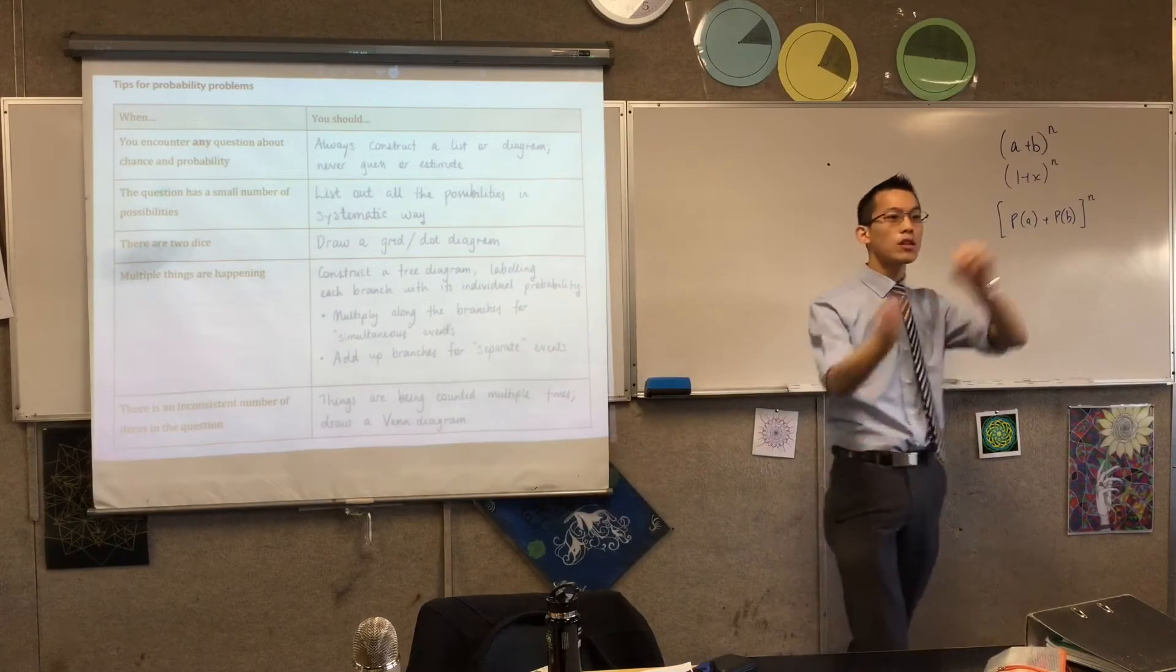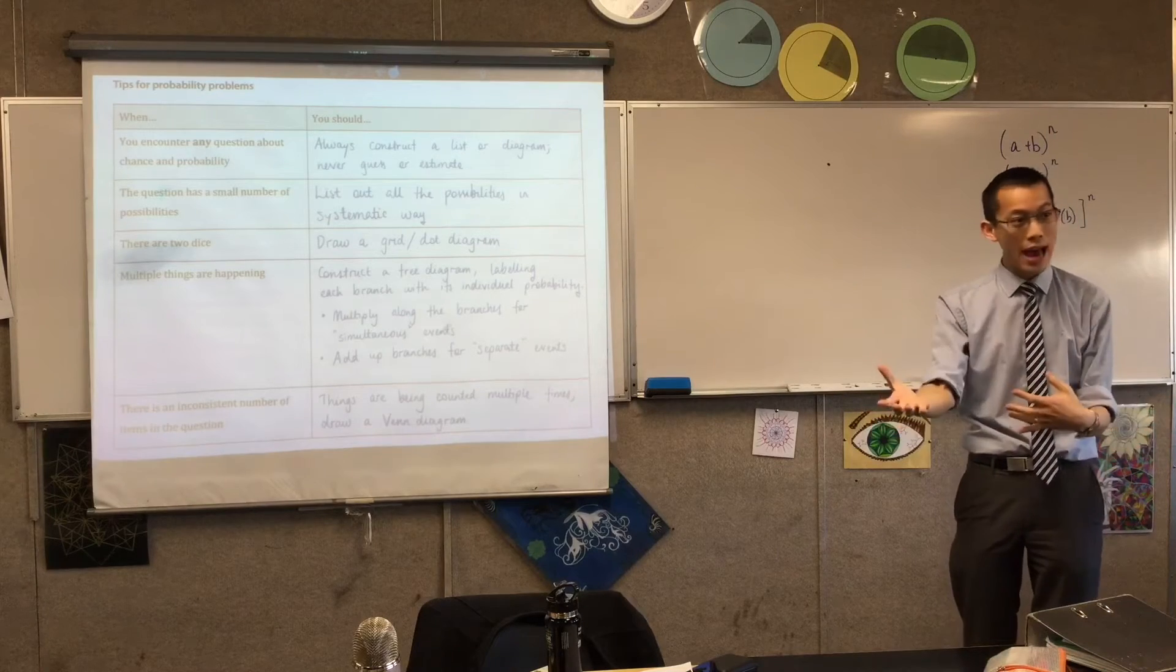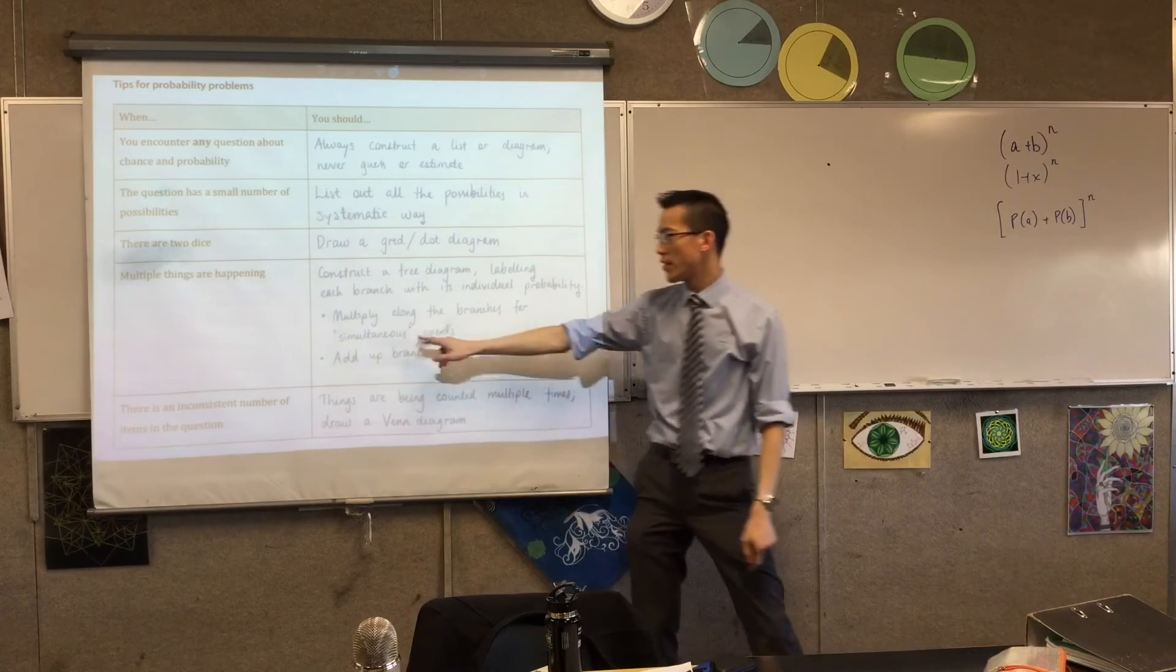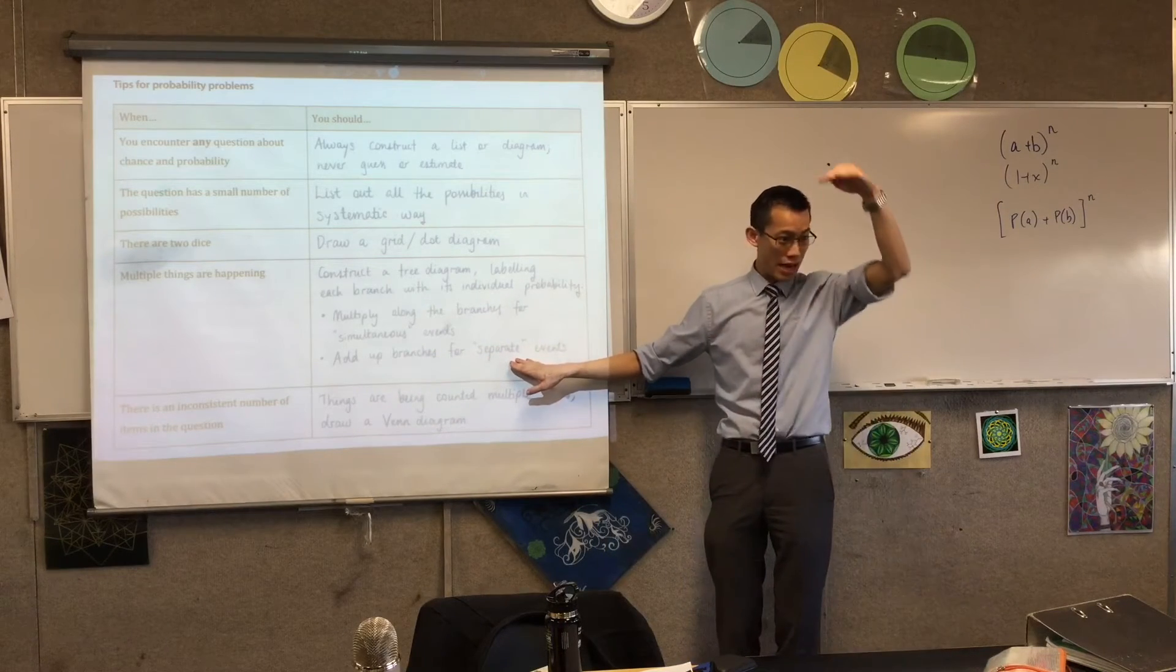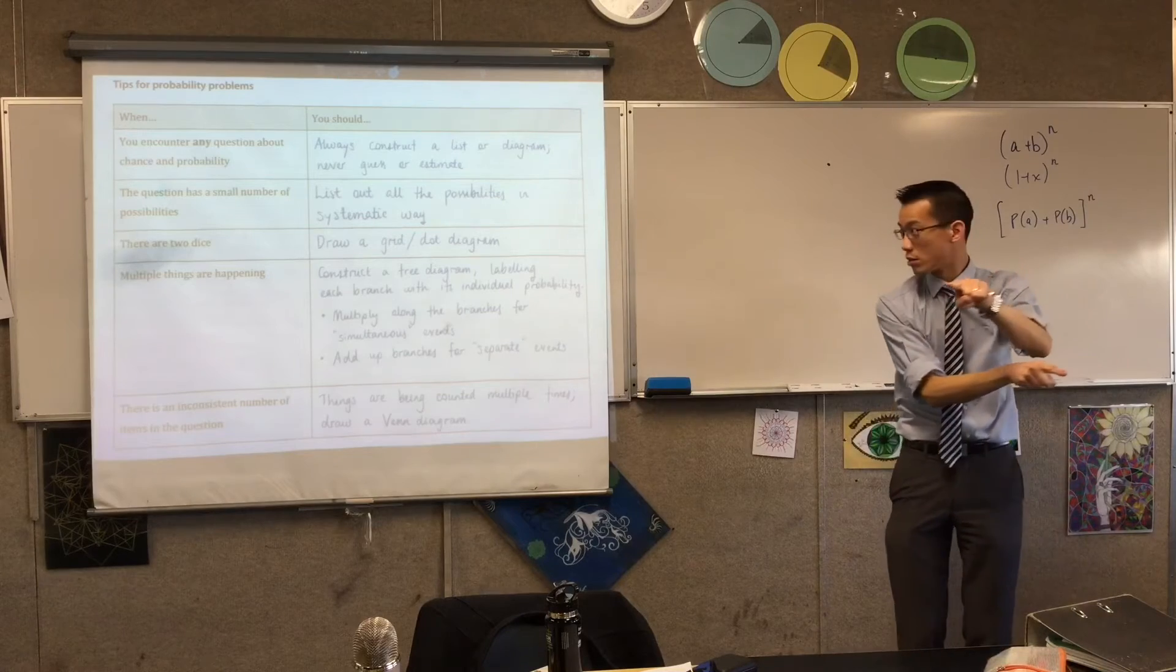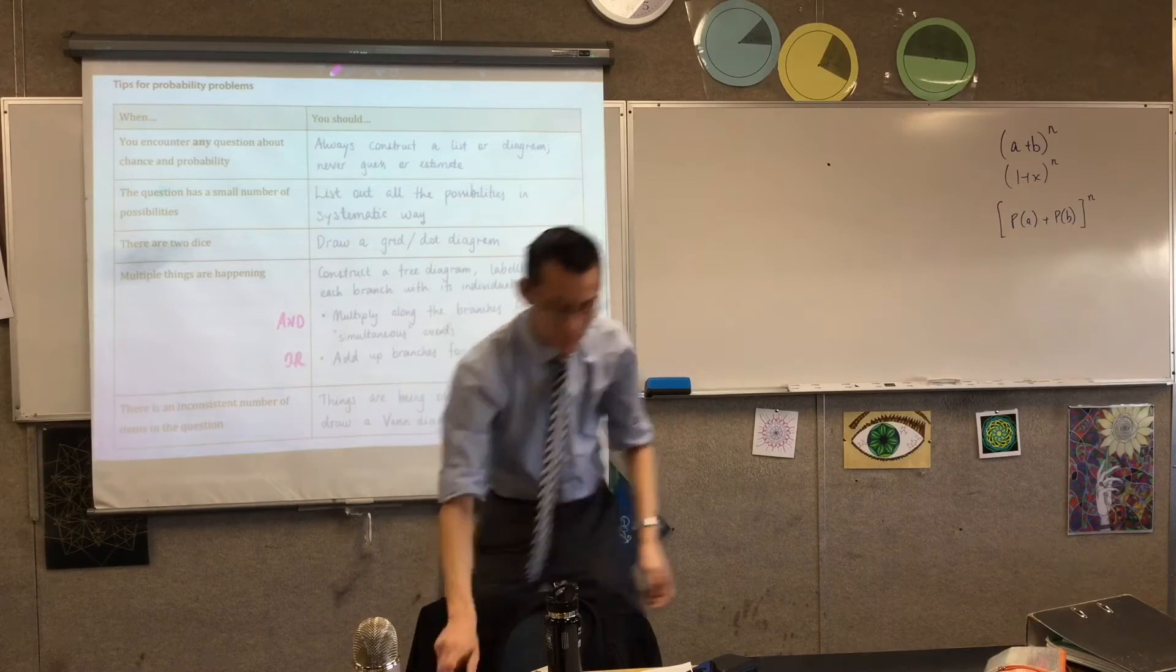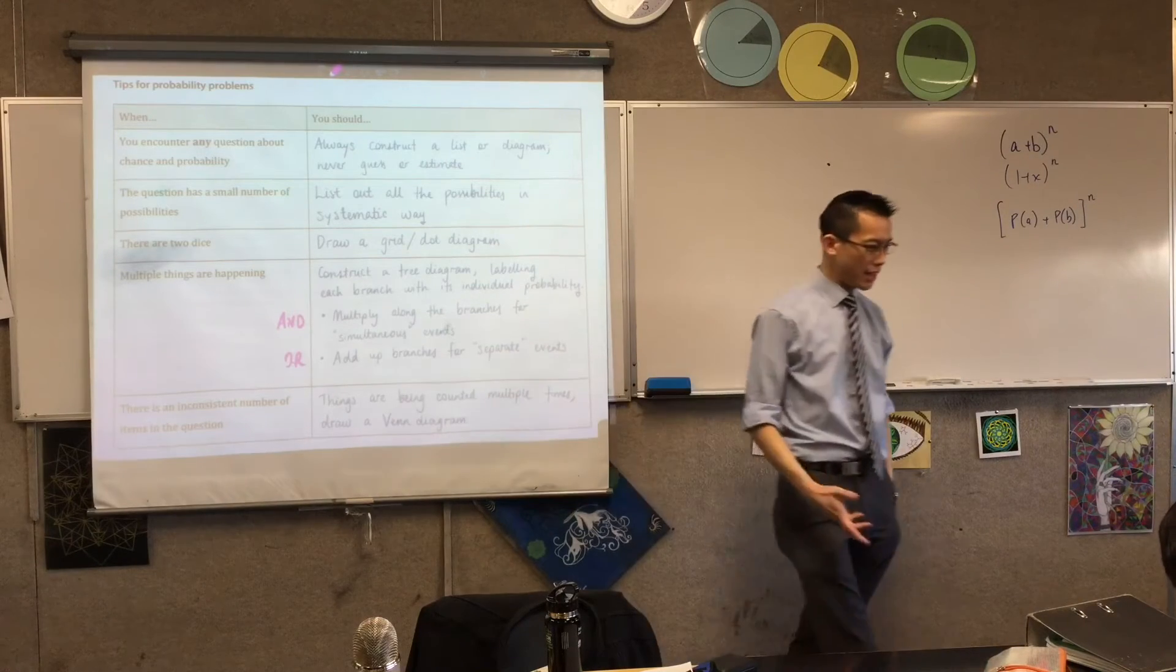When you've got lots of things happening, the hardest math you'll be doing in probability is add and multiply. The question is, when do you add, when do you multiply? When you've got the tree diagram, you multiply along the branches because those events are all happening together. Whereas, if you're going down the branches, you're thinking about events that are not happening together. The words that go with these are 'and' or 'or'. If you've got 'or', these things aren't happening together. If you've got 'and', then they are, so you multiply.